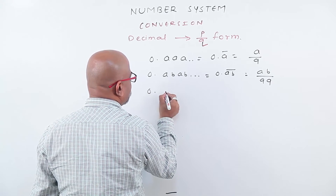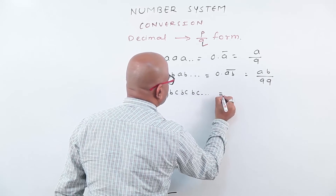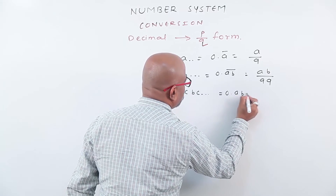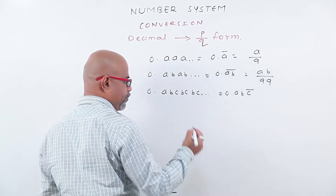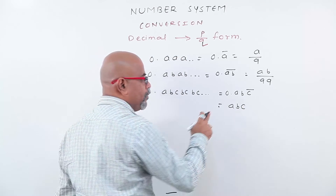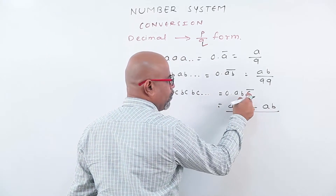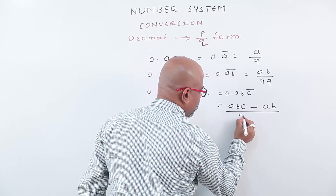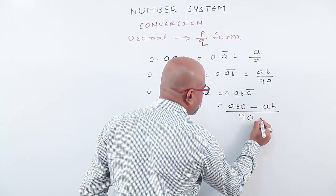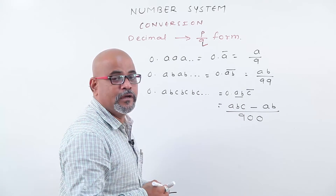If numbers are like a, bc, bc, bc and so on — where only c is recurring — we write reduced form 0.a bc with bar on c. The non-recurring numbers a, b are subtracted, giving abc minus ab, upon 900. Only one number is recurring so we write 9, and two numbers are not recurring so we put two zeros, giving the answer: abc minus ab upon 900.